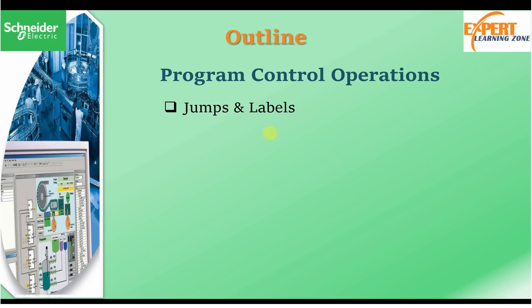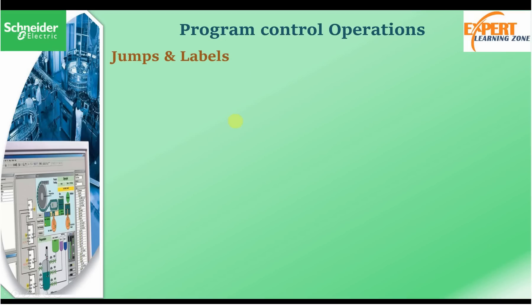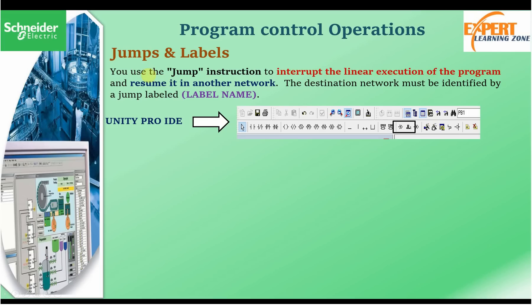The program control operations are the jump and label operations. The jump instruction is used to interrupt the linear program execution, and when it does, it resumes execution at another network. That network needs to have a label name, because when we jump we want to jump to a specific location. The jump instruction specifies where we want to jump to, and the label tells us the destination.